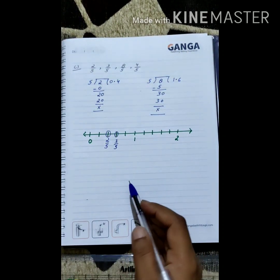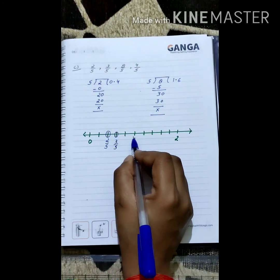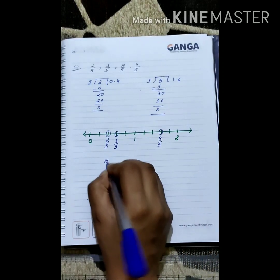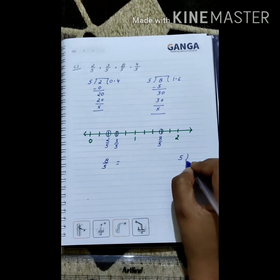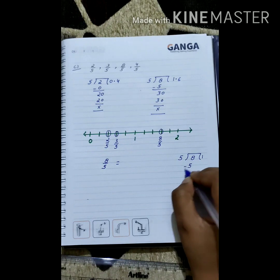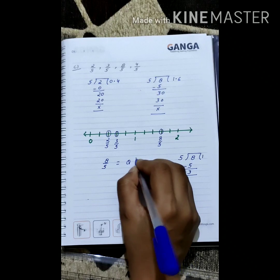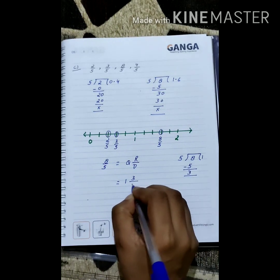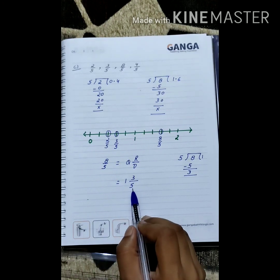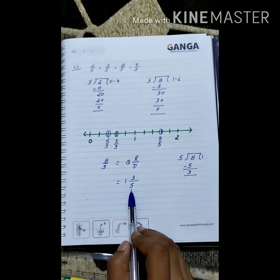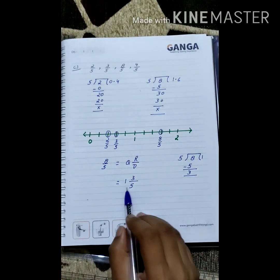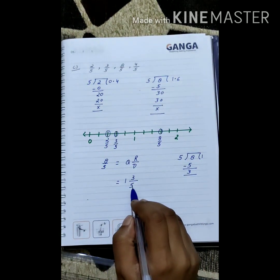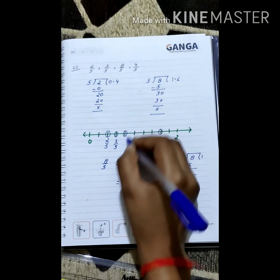For 8 upon 5, we move 8 steps to the right of 0. Alternatively, using the quotient-remainder-divisor rule, 8 upon 5 equals 1 whole 3 upon 5, which means this number lies between 1 and 2. After 1, we move 3 steps to the right of 1 to mark 8 upon 5. For 4 upon 5, move 4 steps to the right of 0.